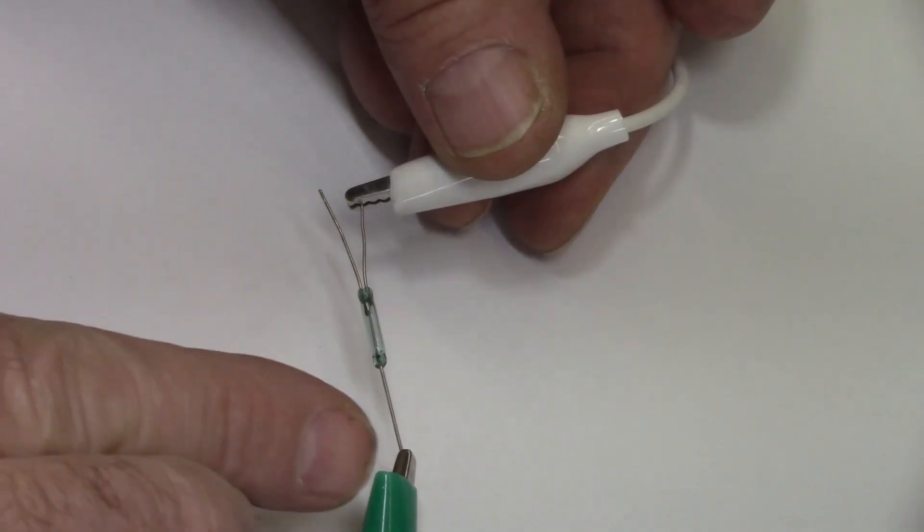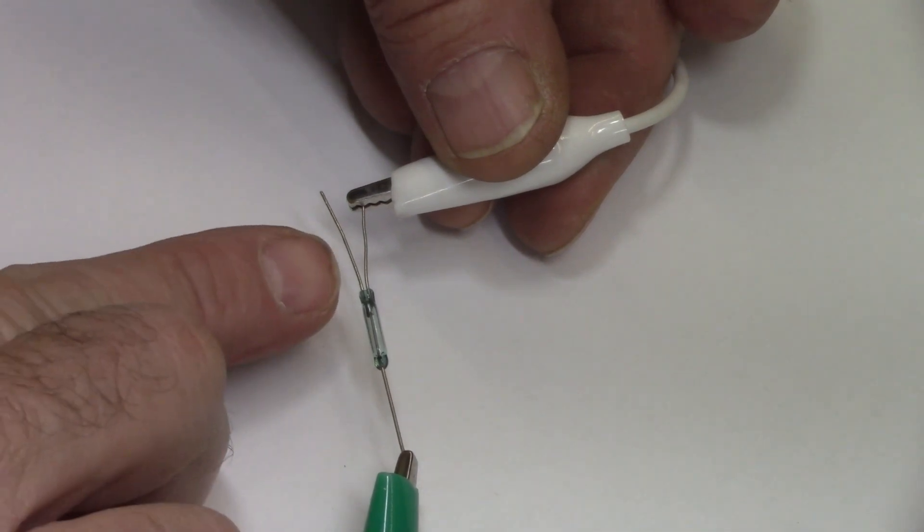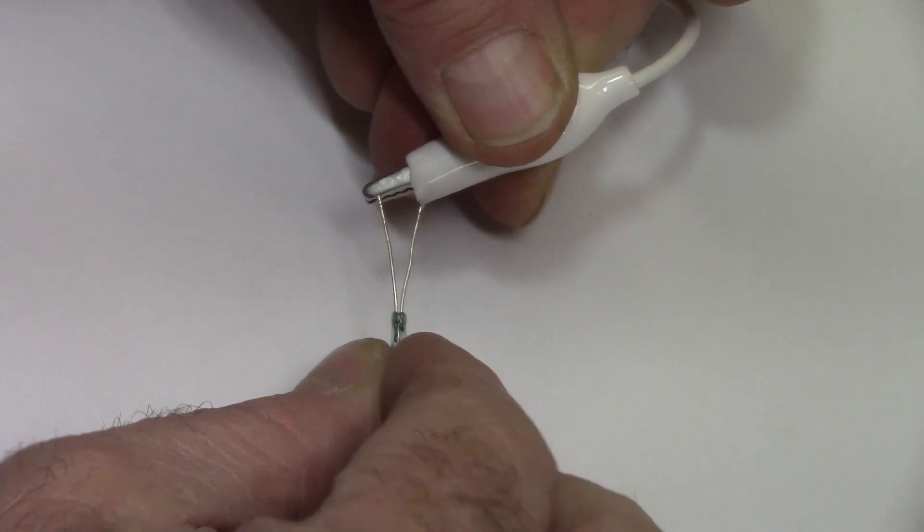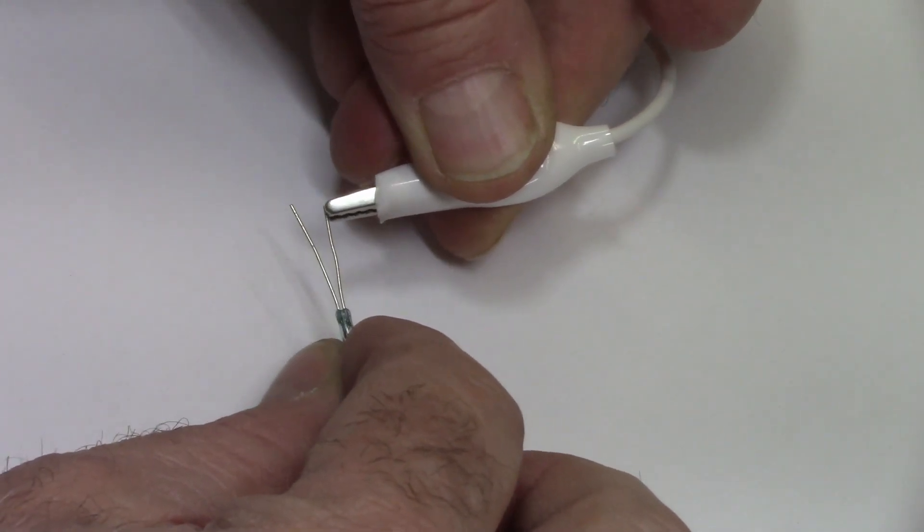I've just got this hooked to a multimeter, and on this reed switch the long leg is the normally closed and the short leg is normally open.